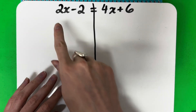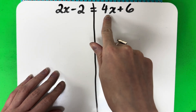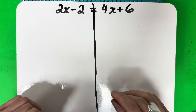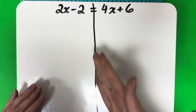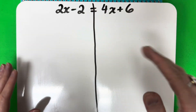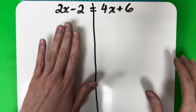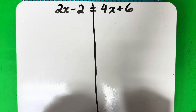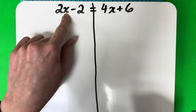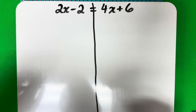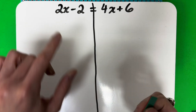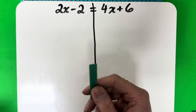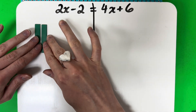Question one: 2x minus 2 equals 4x plus 6. When I'm working with multi-step equations, I like to put a vertical line on the center at the equal sign to keep my left side separate from my right side. Let's go ahead and model 2x minus 2. Since it has the variable x, I'm going to use my rectangle. It is positive 2, so I'm going to use the green side — two green rectangles.